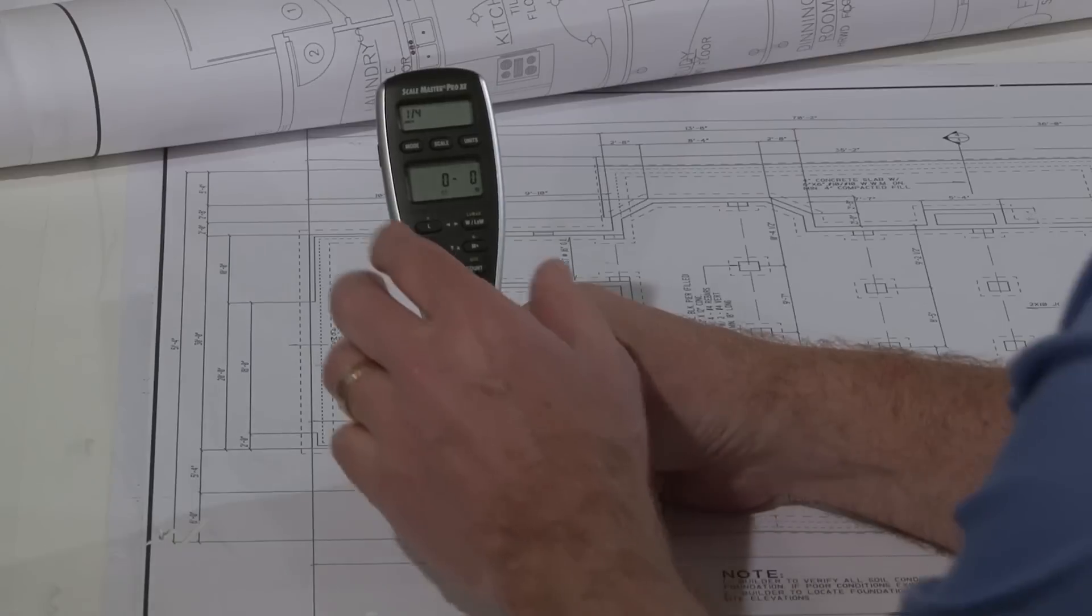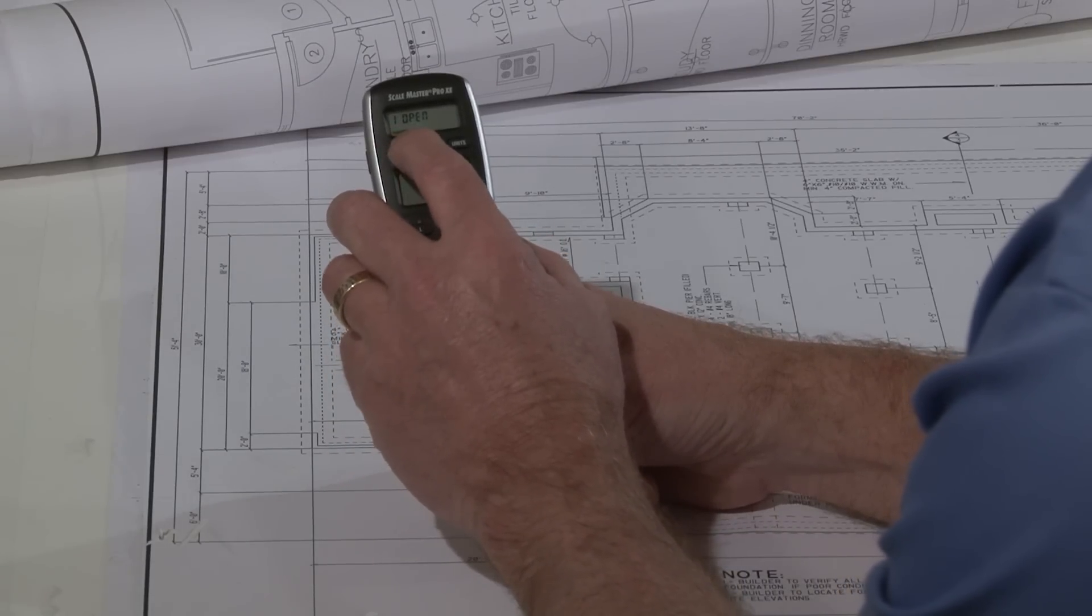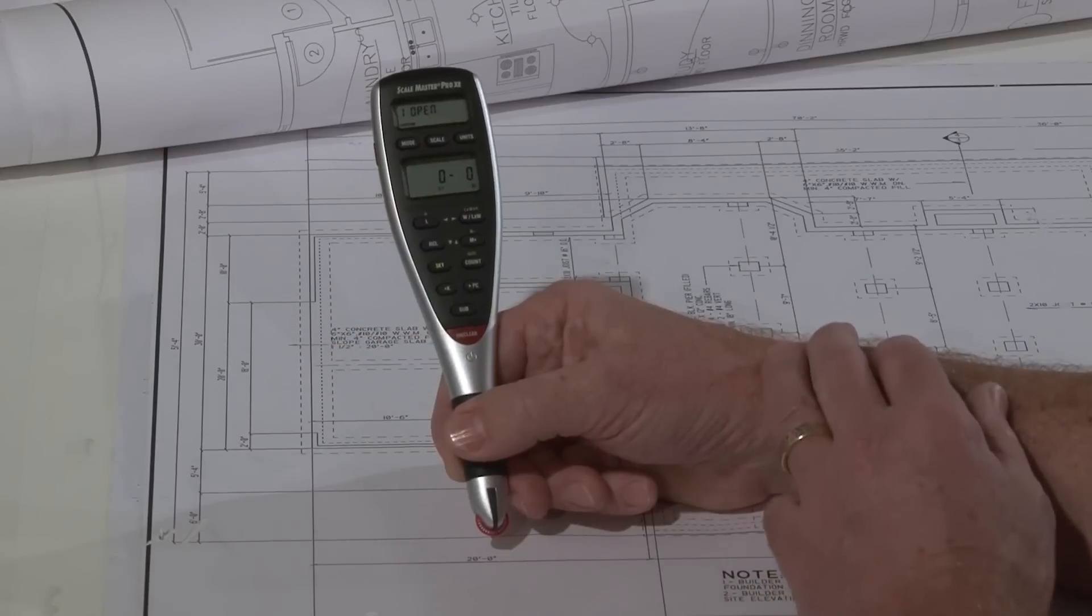The first thing you want to do is get into custom scale mode by pressing the mode key. There it is—it says custom scale, and position one of the available five is open.